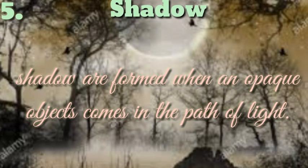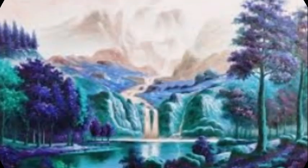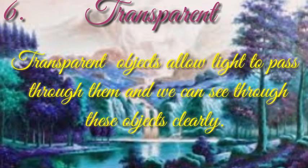Fifth, shadow. Shadows are formed when an opaque object comes in the path of light. Sixth, transparent. Transparent objects allow light to pass through them and we can see through these objects clearly.